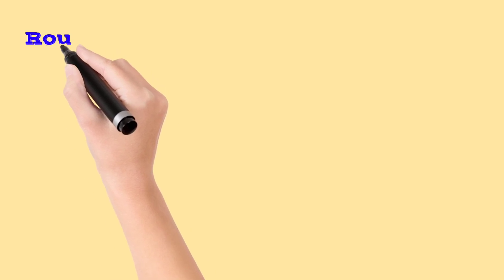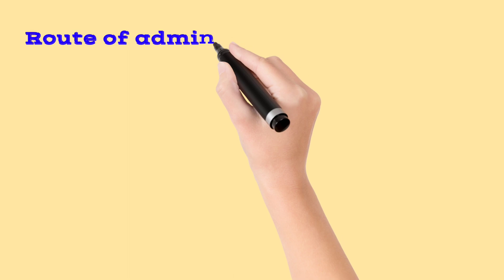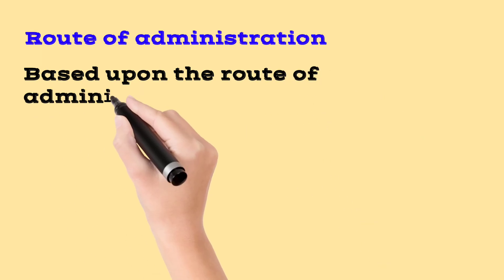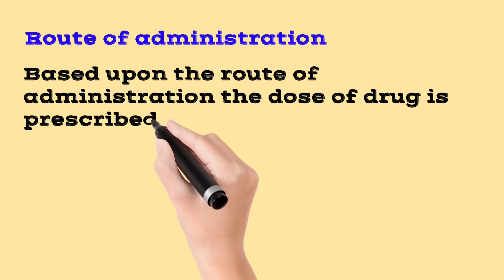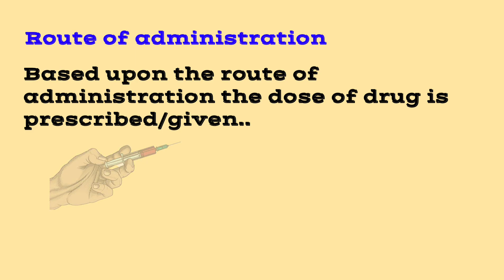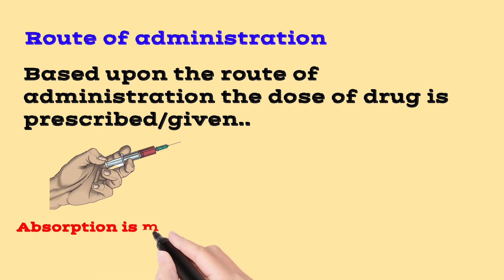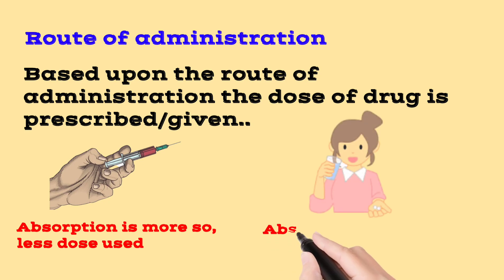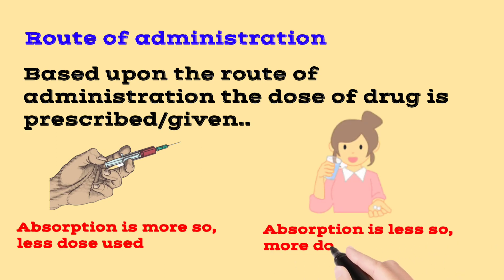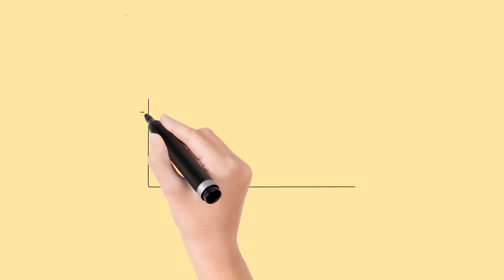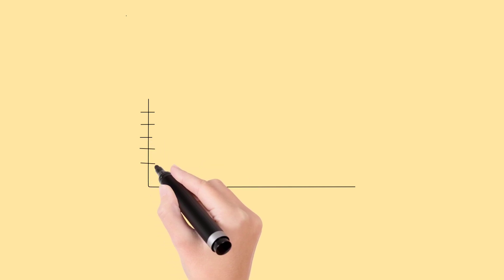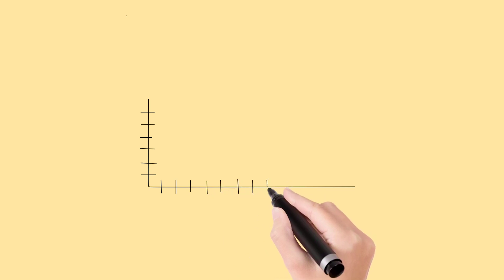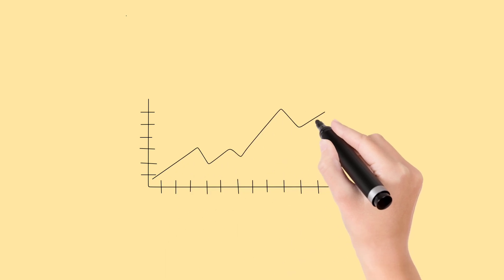The next factor is route of administration. Route of administration influences the dose. For example, the IV route has greater absorption, so the dose required is less. For the oral route, absorption of the dose is less, so the dose required is higher. The absorption rate varies in increasing or decreasing order depending on the route.